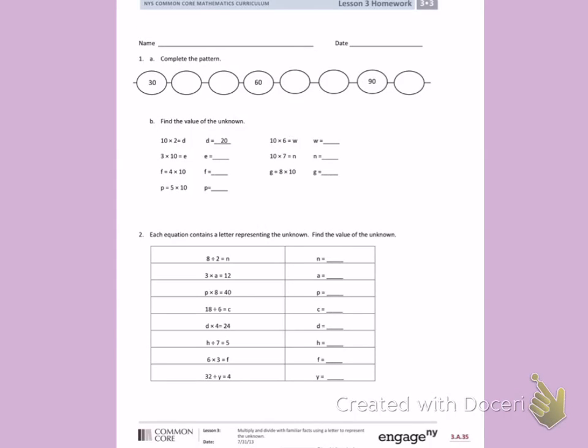This is Lesson 3 Homework from Module 3, Side 1. The objective today was to multiply and divide with familiar facts using a letter to represent the unknown.